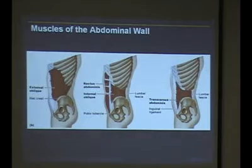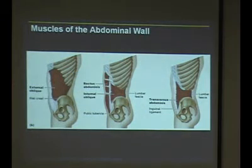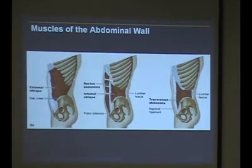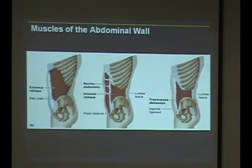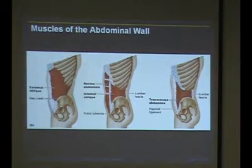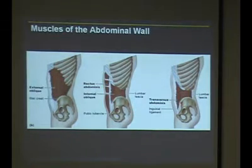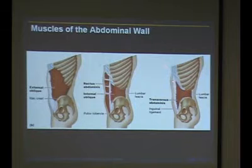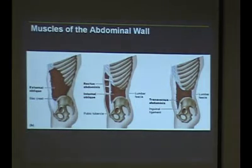Here's another picture of the same thing. You have the external obliques — they run down in this direction. And then you have the internal oblique, a lot of it runs this direction, but as you get farther down the fibers are going to change their direction. And then a similar kind of thing happens with the transverse — most of the time it runs transverse, but as you get down into there, it has to fan out again.